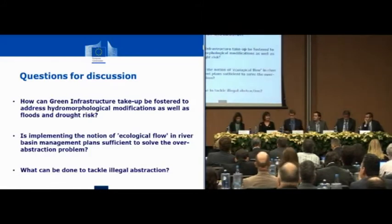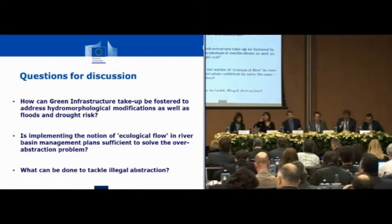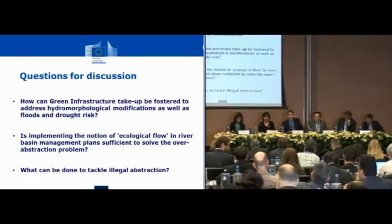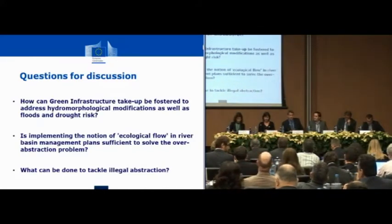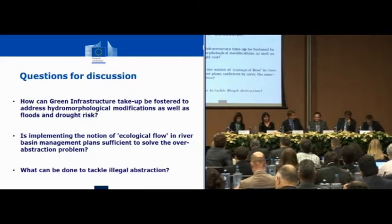Thank you very much. We spent quite a bit of time on the first question, but that is the largest question. In the interest of time, we will combine the last two questions because they are both on abstraction and ecological flow. Is implementing the notion of ecological flow the way to deal with the over-abstraction problem? And what about illegal abstraction? We start with Alistair.